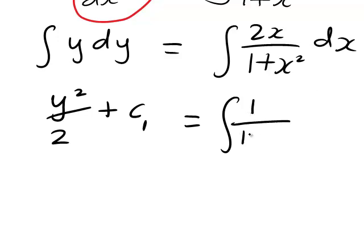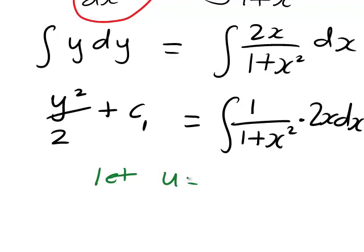And I'm going to start just by rearranging the expression a bit algebraically to rewrite it as 1 divided by 1 + x² times 2x dx. And integration of this type is best solved using substitution. So here I'm going to let u be equal to 1 + x².